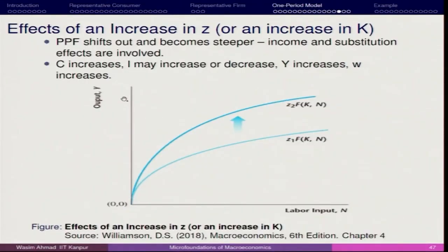Hi everyone, we are going to start the next session. Now, the second case — what is the second case? The second case is the effect of increase in G. When we have an increase in G, we are talking about productivity — how productivity increases or decreases.